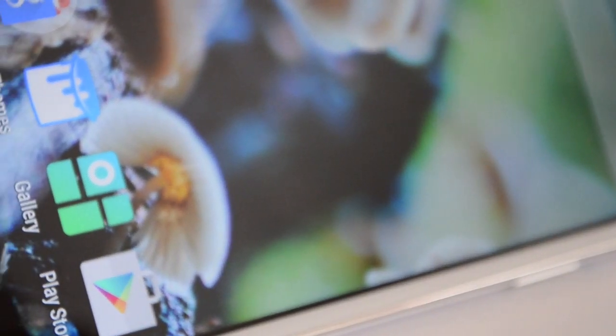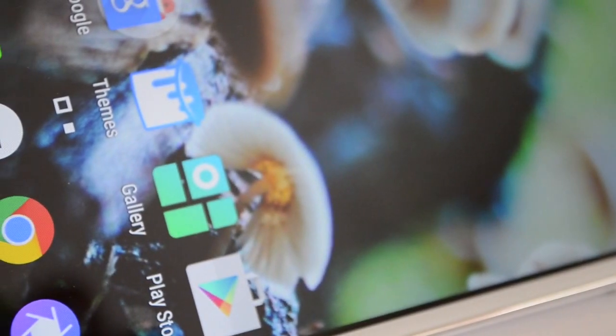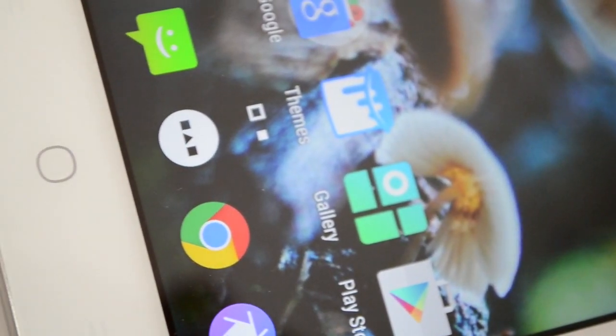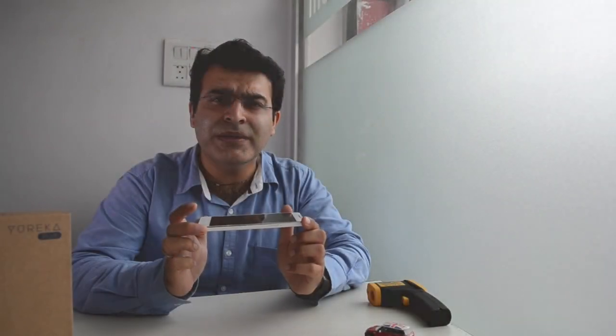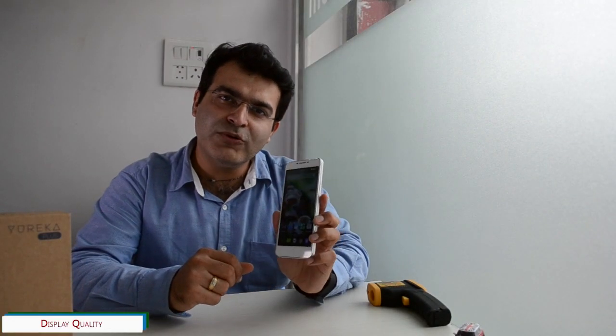On the front there is a 5.5 inch display and there are 3 touch capacitive keys which are backlit. The overall aesthetics and physical appearance, design and build of the phone is fairly impressive for the price at which it is selling. Let's talk about the display quality.